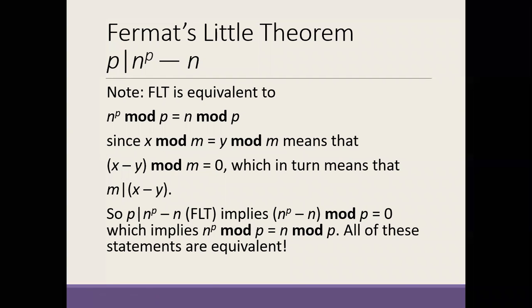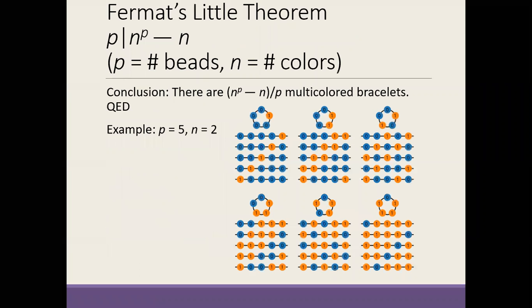So you'll recall that we tried to give the basic idea for why Fermat's Little Theorem was true last time. Fermat's Little Theorem says that if you have a prime p and any integer at all, then p divides n to the p minus n. The argument we gave was a visual one involving string beads of different colors, where the beads fall into groups of size p. It was important that p be prime.